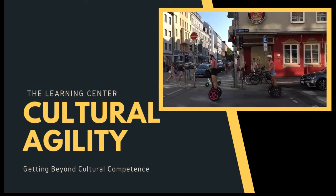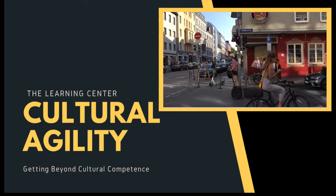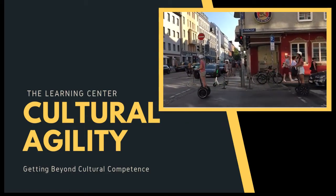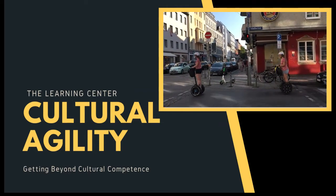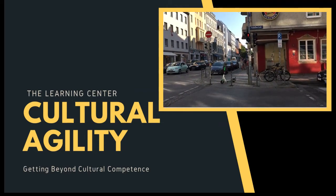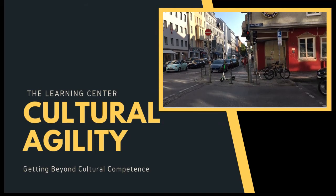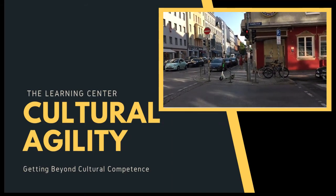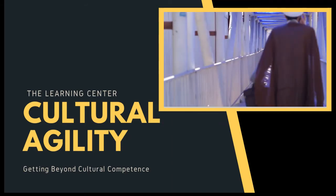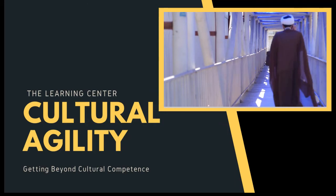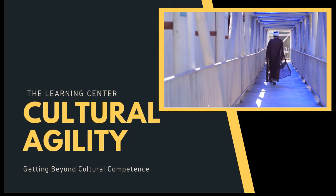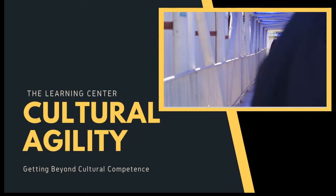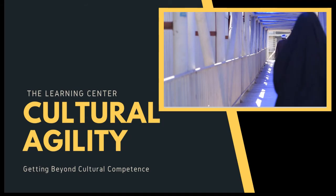Title II of the Americans with Disabilities Act of 1973 prohibits discrimination against all qualified persons with disabilities in all programs, activities, and services provided by public institutions, including state and local governments and their departments. Title III of the Americans with Disabilities Act of 1990 prohibits discrimination based on disability by places of public accommodation and commercial facilities.